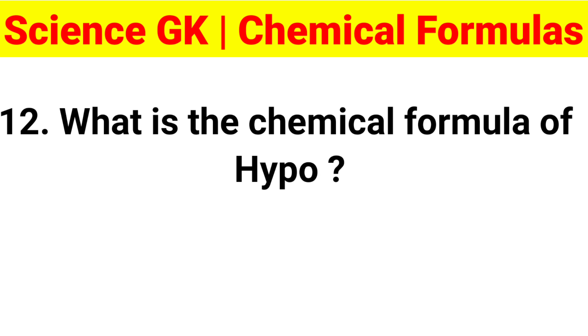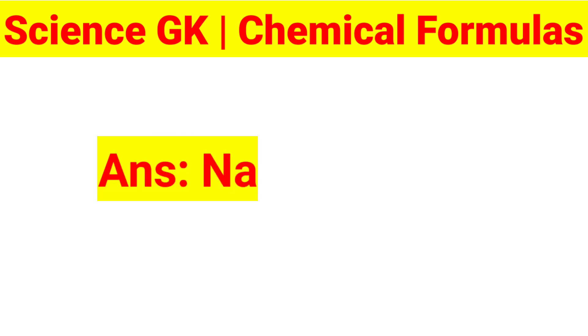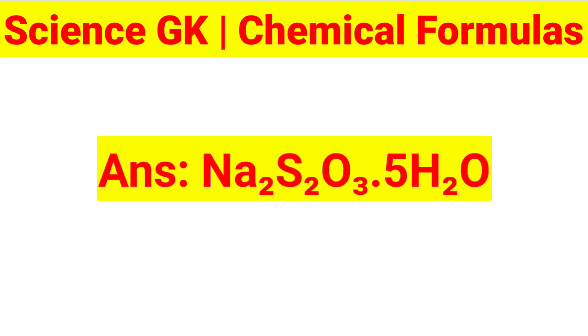Question 12: What is the chemical formula of hypo? Answer: Na2S2O3·5H2O.